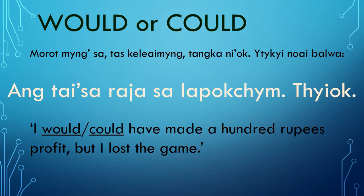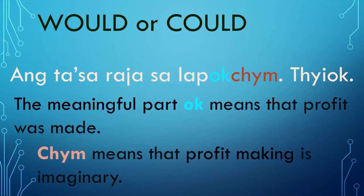In English, this would be: I would or could have made a hundred rupees profit, but I lost the game. The meaningful part Ok means that profit was made, but Chm means that profit-making is imaginary.